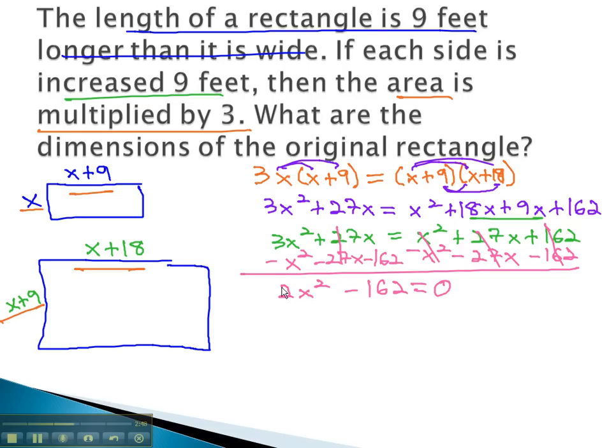As we try and factor this expression, we'll start with the GCF of 2, giving us x squared minus 81 equals 0. x squared minus 81 is easily factored to the difference of squares x plus 9, x minus 9 equals 0.